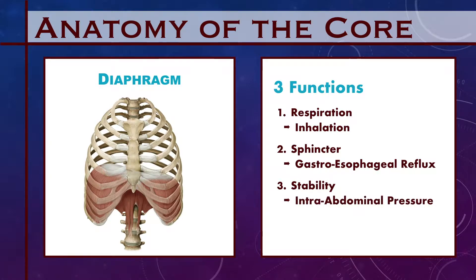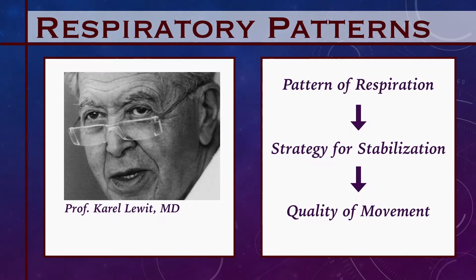The diaphragm is definitely the most overlooked component of core stability. It is impossible to have adequate core stabilization if the diaphragm does not function correctly. Sometime between three and four months of age, the infant's central nervous system learns to coordinate the diaphragm with the abdominal wall and pelvic floor to create core stability. This is when the diaphragm switches from being a purely respiratory muscle to participating in stabilization too, and it can perform either one or both functions at the same time based on demand.